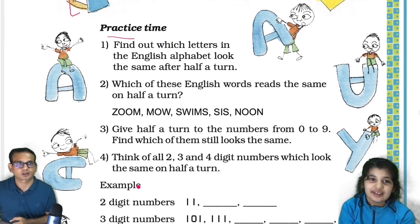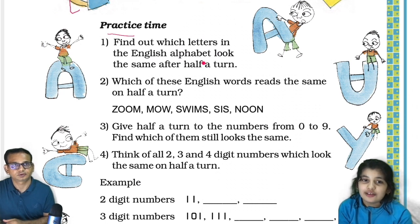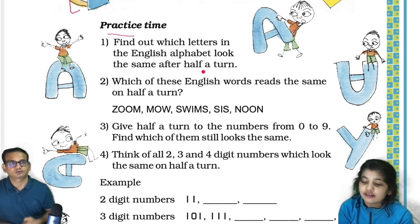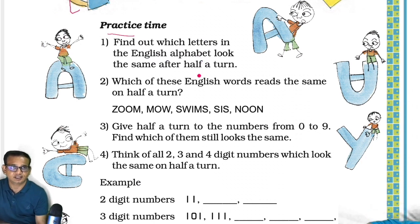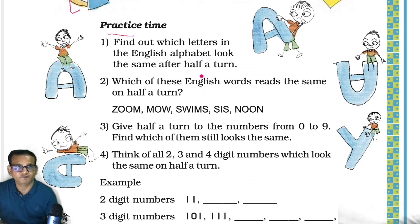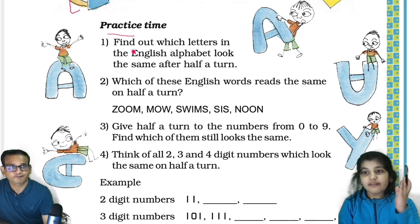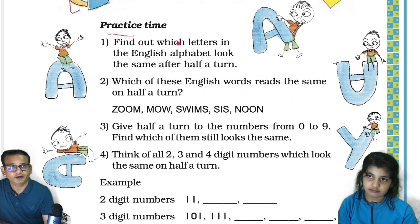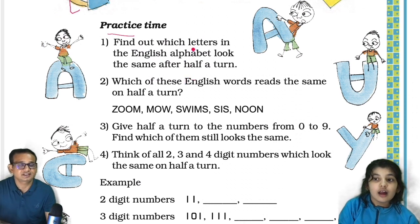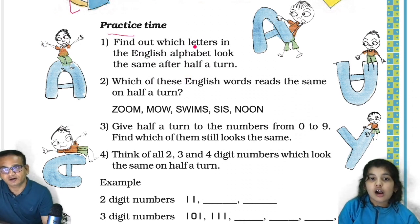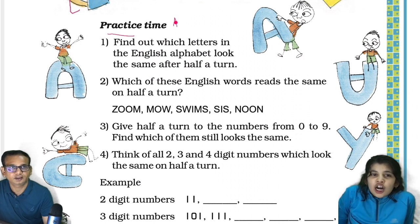Find out which letters in the English alphabet look the same after half a turn. Let's start with letter A — A will not look the same after half a turn.